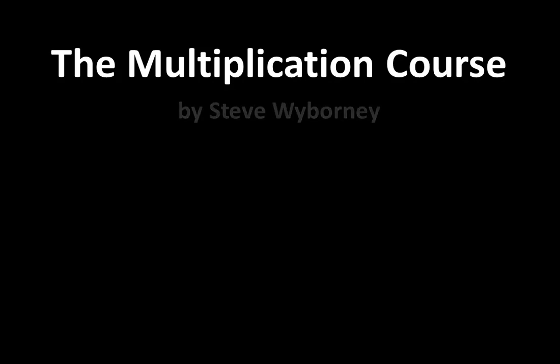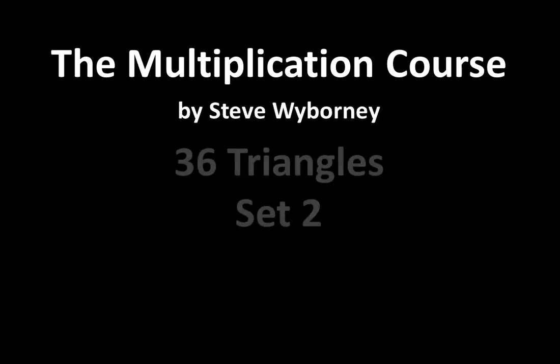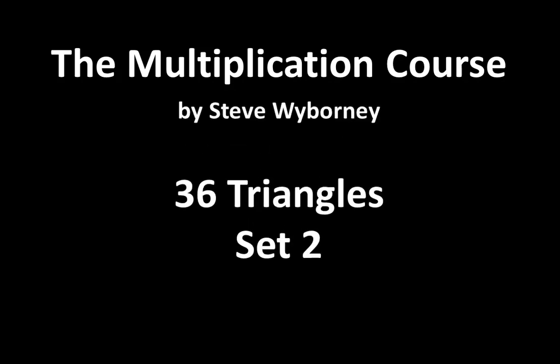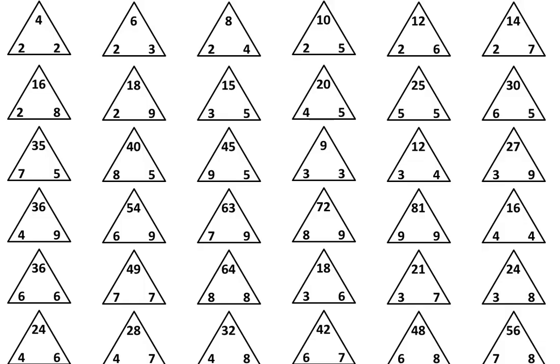Welcome to the Multiplication Course. My name is Steve Wyborny and this is 36 Triangles Set 2. In this video you will make a new set of triangles with the facts in a new order. When you are finished your paper will look like this, and then you will have a chance to take a closer look at the relationships in the triangles. For this activity you'll need a pencil and a blank piece of paper. Pause the video until you have those supplies ready.